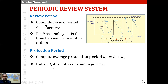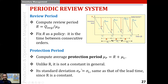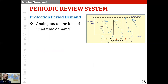Unlike the review period, the protection period is not a constant; instead it has some variability. Its standard deviation is taken to be the same as the standard deviation of lead time, because R in this formula is a constant. The protection period is the one used to compute the target inventory level.